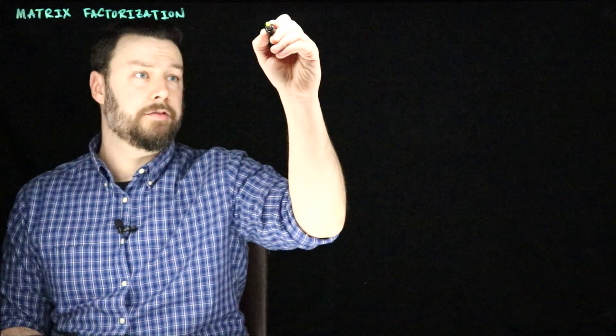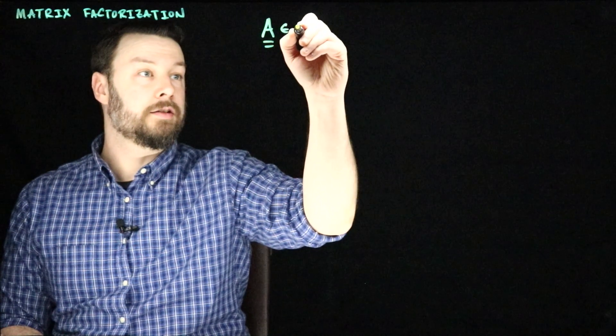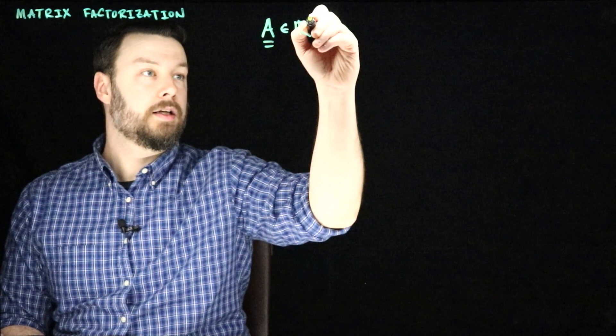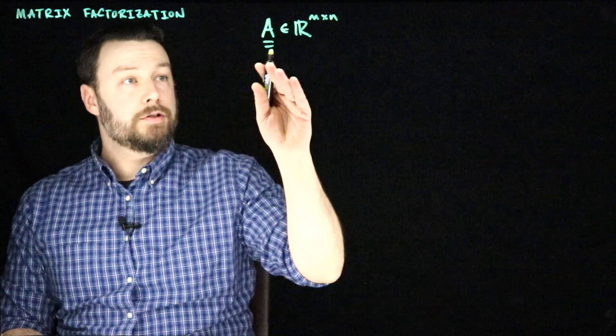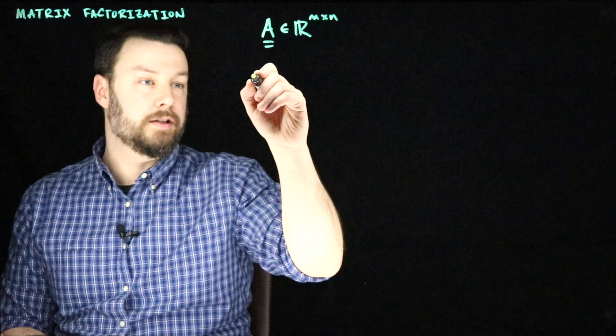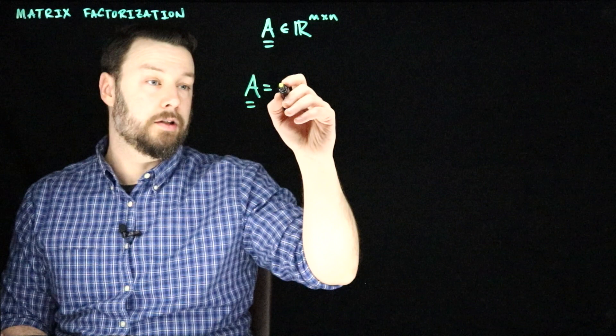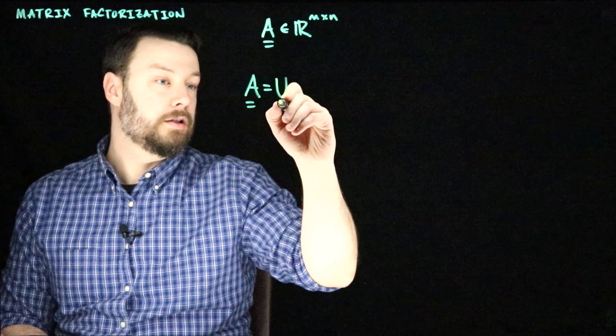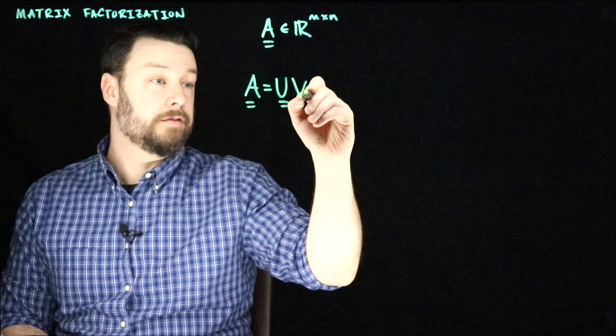Our starting point is to imagine that we have some A, not necessarily square. Let's imagine that it is M by N. And what we're going to do is say that A, this matrix of interest, is represented as the product, let's say maybe even approximately the product of two other matrices, U and V transpose.